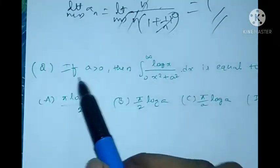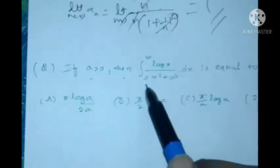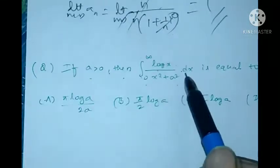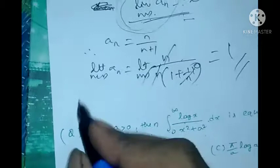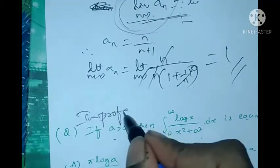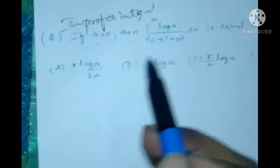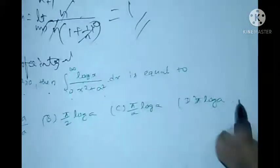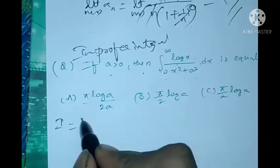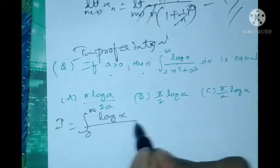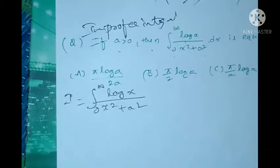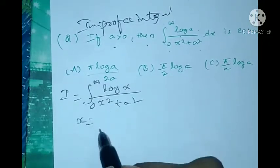This problem: if a > 0, then the improper integral from 0 to infinity of log(x)/(x² + a²) dx equals what? The options are: option A is π·log(a)/(2a), option B is (π/2)·log(a), option C is π·log(a). Solution: let I = ∫₀^∞ log(x)/(x² + a²) dx.